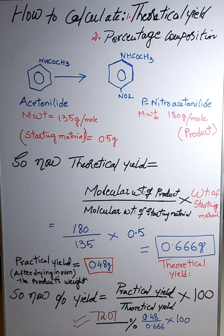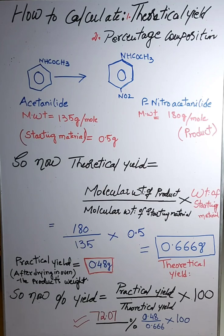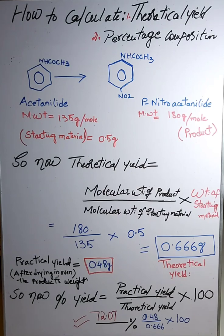Allow it to stay for 15 more minutes with occasional stirring, then filter it through the Buchner funnel. If the Buchner funnel is not available, you can use ordinary filtration with a fluted filter paper. The Buchner funnel has a sintered base and is used for suction filtration, which ends up giving you nice shiny precipitates. You can also use an ordinary filtration funnel.